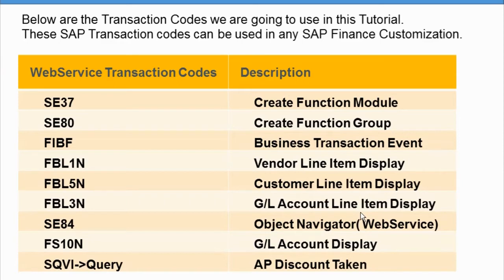Consultants go through this transaction to customize fields, bring in additional data, and populate standard fields that are not populated by default — we'll cover that. FBL5N is the customer line item display, used by companies with sales and distribution to track when they will receive payments or handle spending.